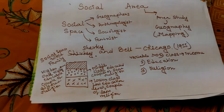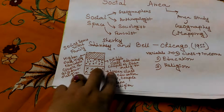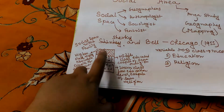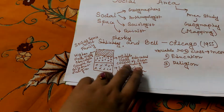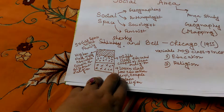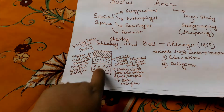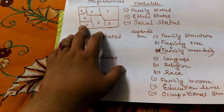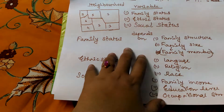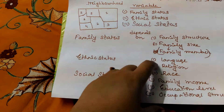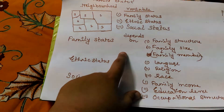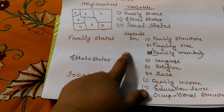In the last class I told you that within a family you may find different spaces depending on income, social status, and education level. This is the social space. If we think about this same concept in a broader sense, it becomes the area of social area. To understand the social area, I have taken three important variables: family status, ethnic status, and social status.